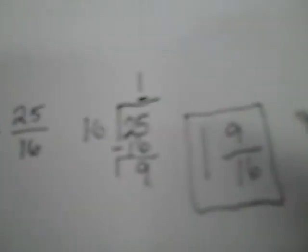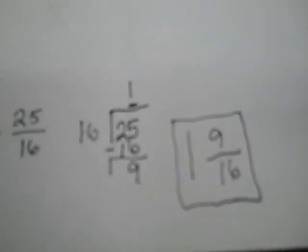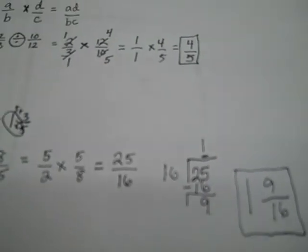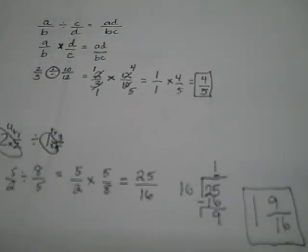So 2 and a half divided by 1 and 3 fifths equals 1 and 9 sixteenths. If ever you have a question about this, you can just rewind the video and go back and watch at your own speed. Thank you, everybody.